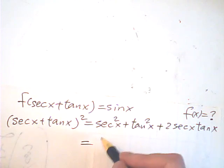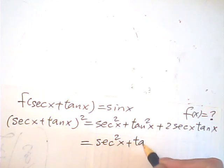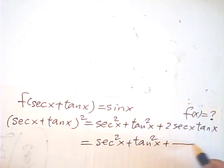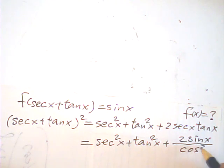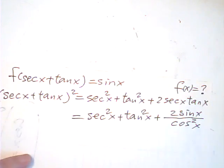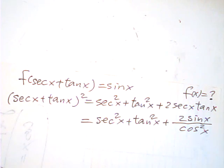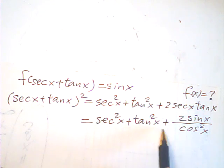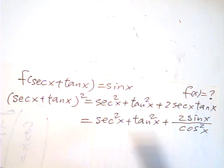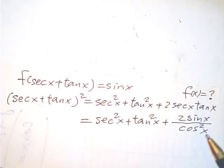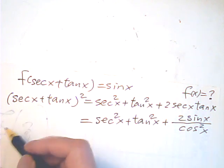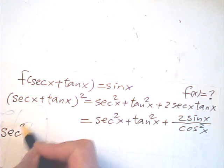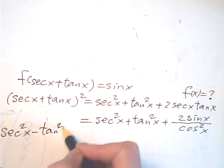And this is equal to sec²x + tan²x + 2·sin x over cos²x. Now I must get rid of one of them — preferably tangent squared — so I can come up with a clearer relation between sine and (sec x + tan x). So I use the formula: sec²x − tan²x = 1.